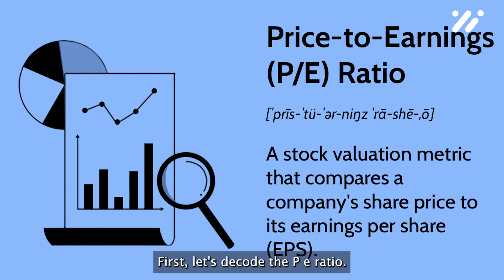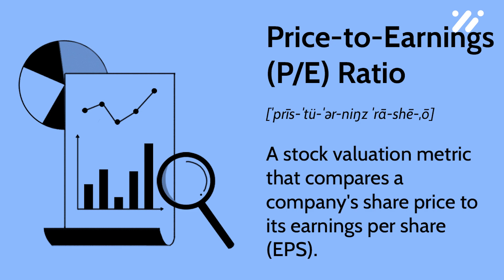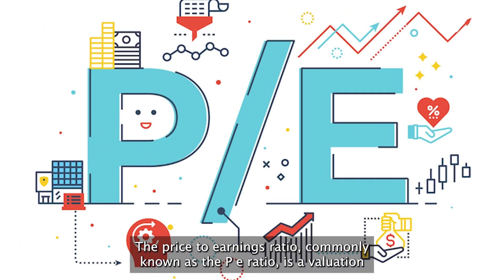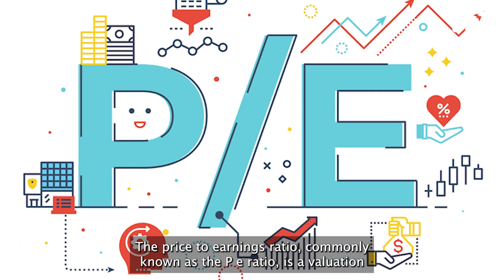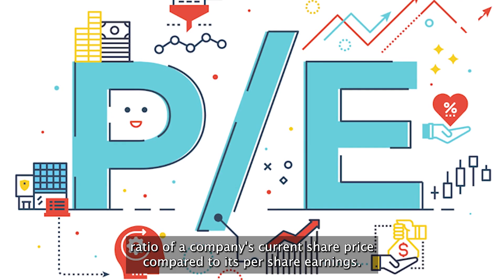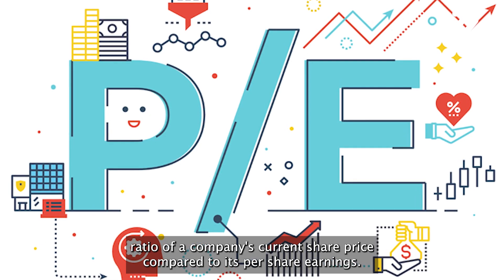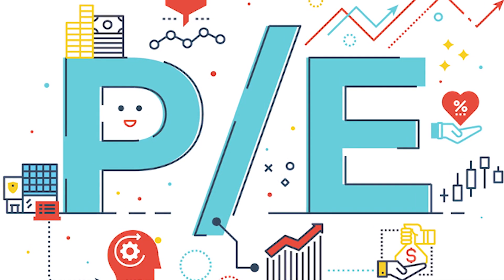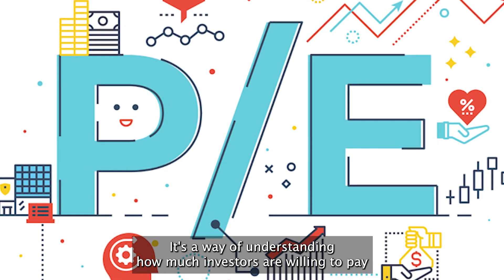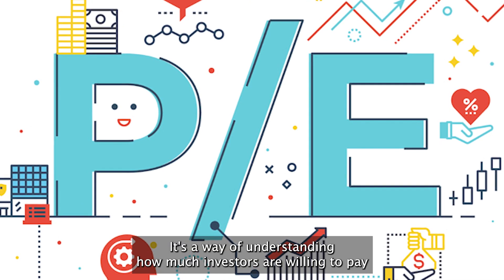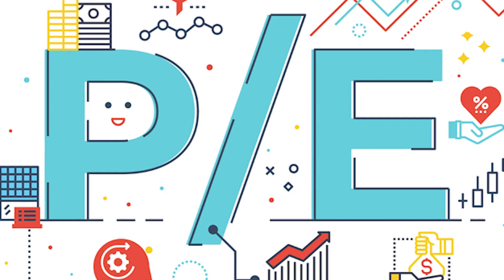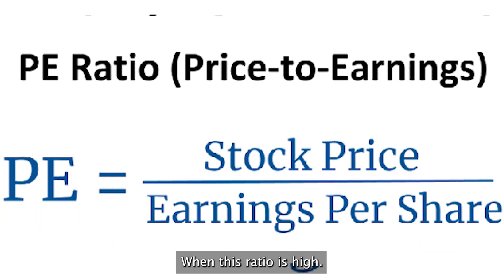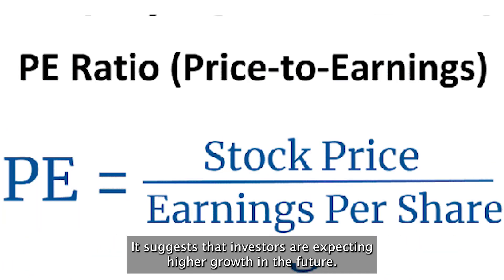First, let's decode the P.E. ratio. The price to earnings ratio, commonly known as the P.E. ratio, is a valuation ratio of a company's current share price compared to its per share earnings. It's a way of understanding how much investors are willing to pay for every dollar of a company's earnings. When this ratio is high, it suggests that investors are expecting higher growth in the future.